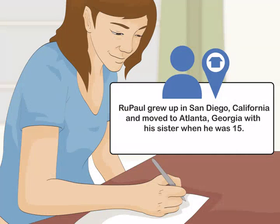Talk about the location of the person's childhood. Discuss where the person grew up and mention any key moves to other cities or countries during their childhood. For example, you may write: RuPaul grew up in San Diego, California and moved to Atlanta, Georgia with his sister when he was 15.